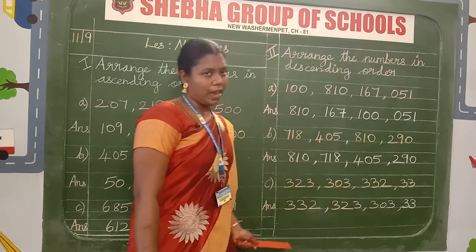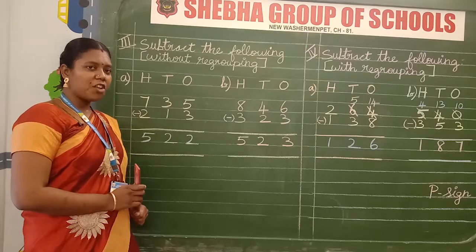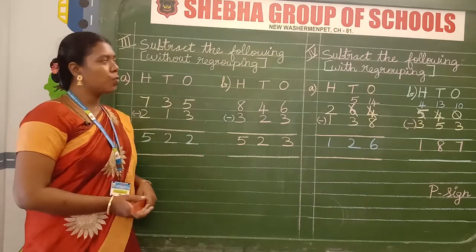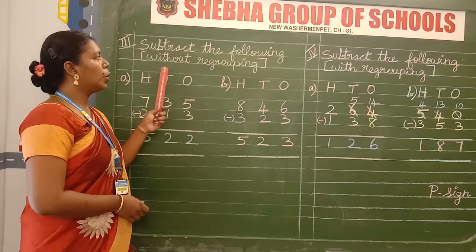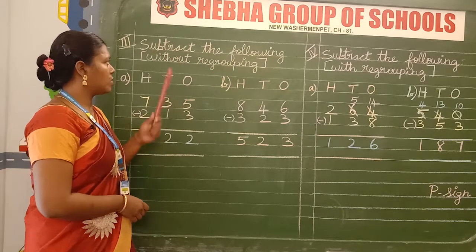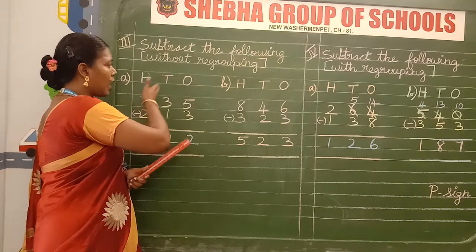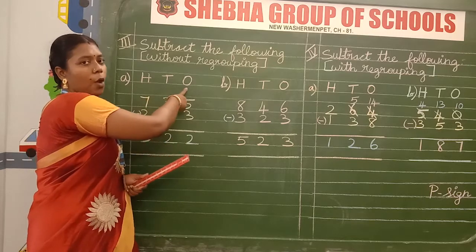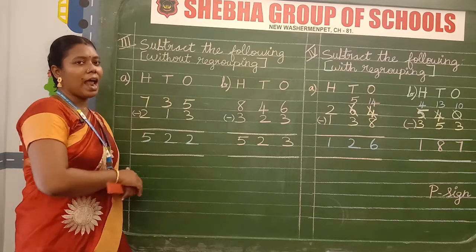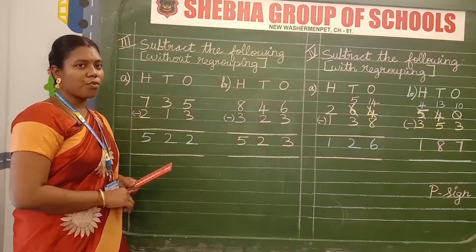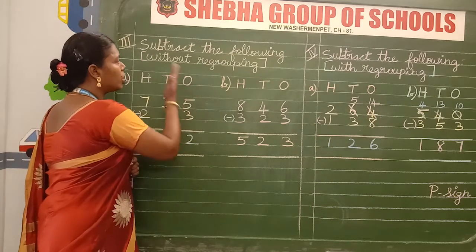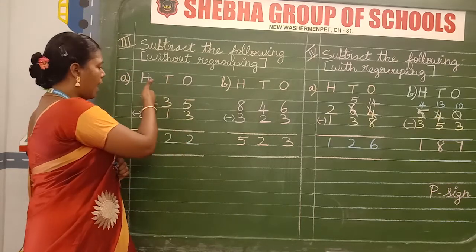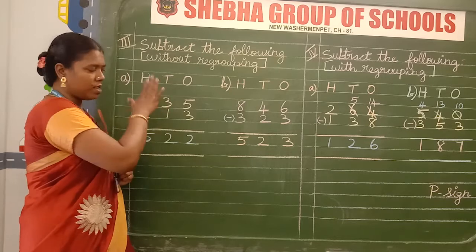After finishing the second Roman numeral, take a fresh page for the third Roman numeral. What is the third Roman numeral? Subtract the following without regrouping. Without regrouping means you don't combine the place values. O stands for ones, T for tens, H for hundreds — these are the place values of the numbers. Without regrouping: subtract ones from ones, tens from tens, hundreds from hundreds. This is the without regrouping method.